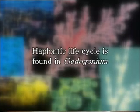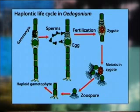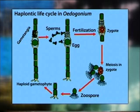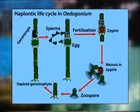The haplontic life cycle is best exemplified by Oedogonium. The gametophyte of Oedogonium is a haploid filamentous multicellular structure with specialised cells called as gametangia. The male gametangium or the antheridium makes sperms, while the female gametangium or oogonium forms the eggs.